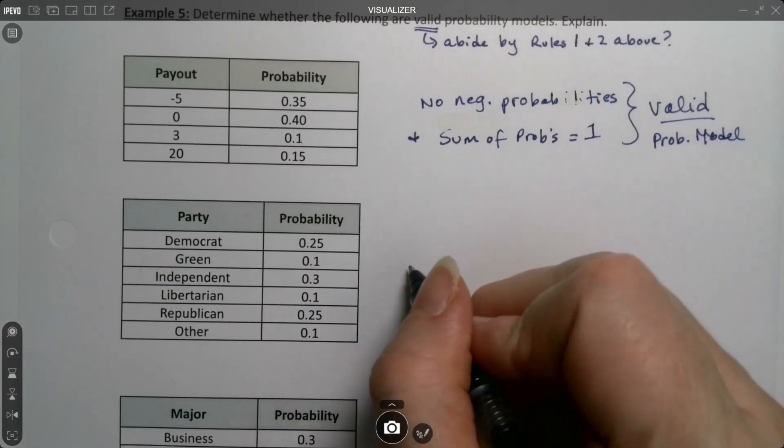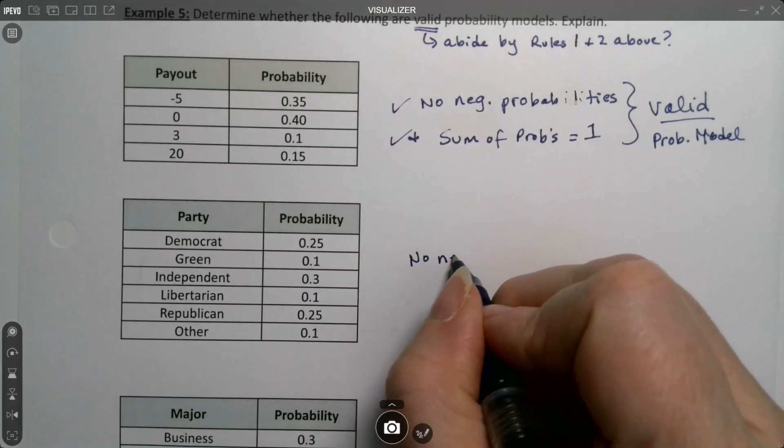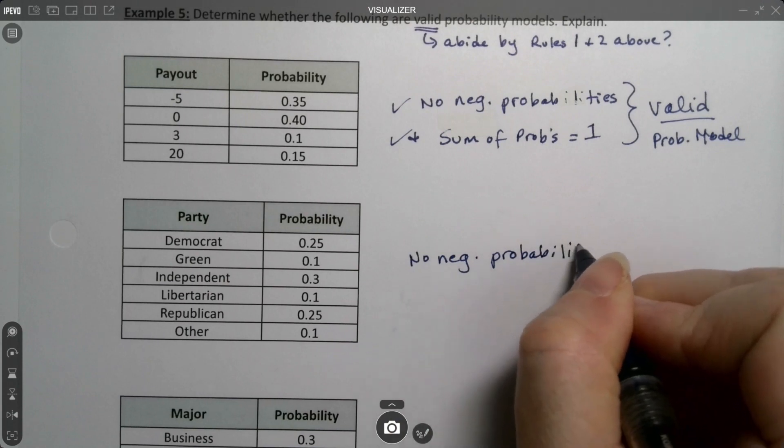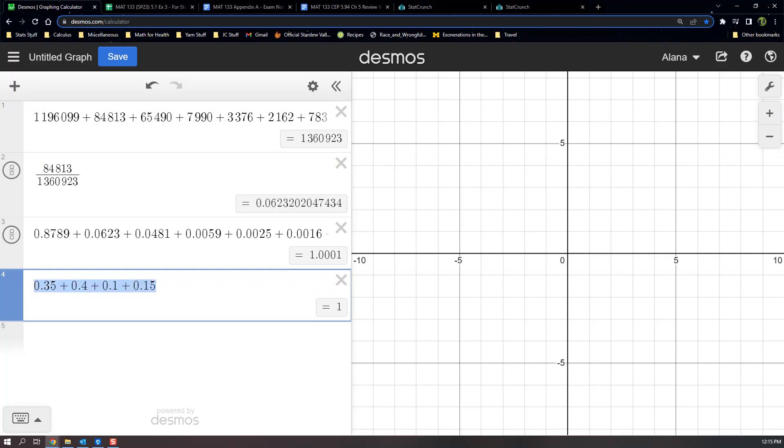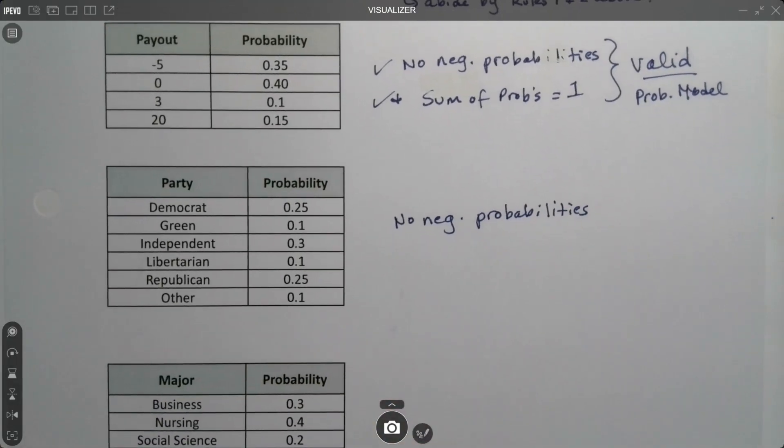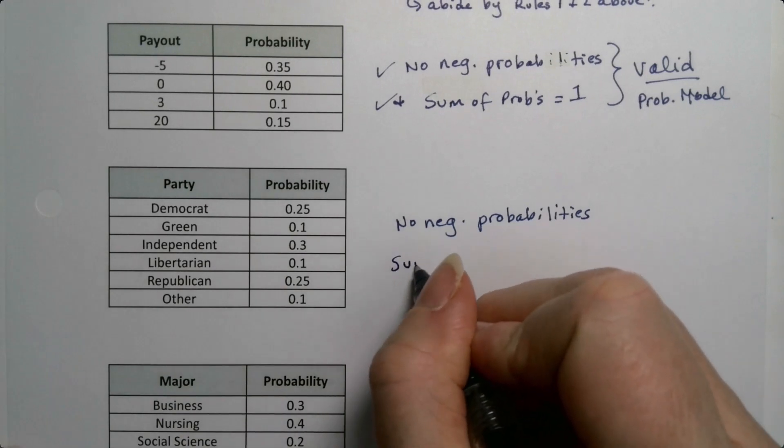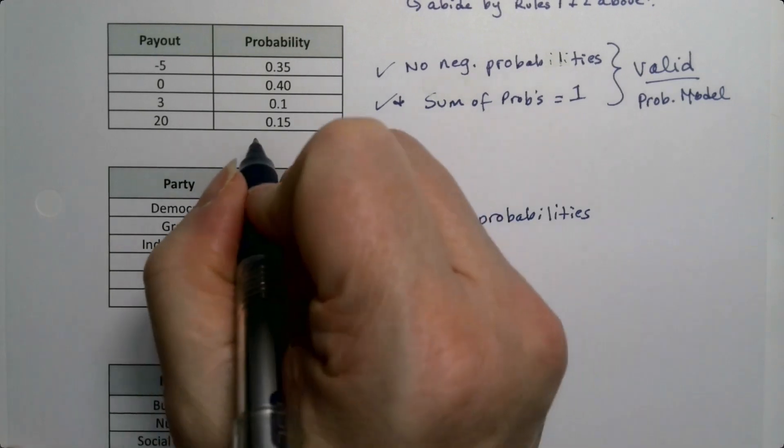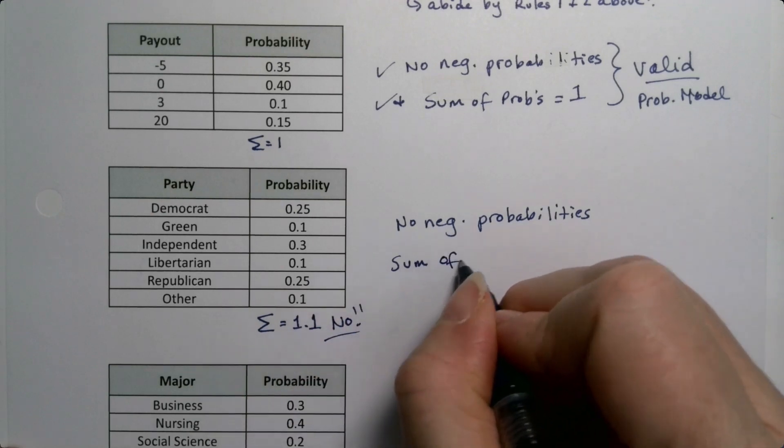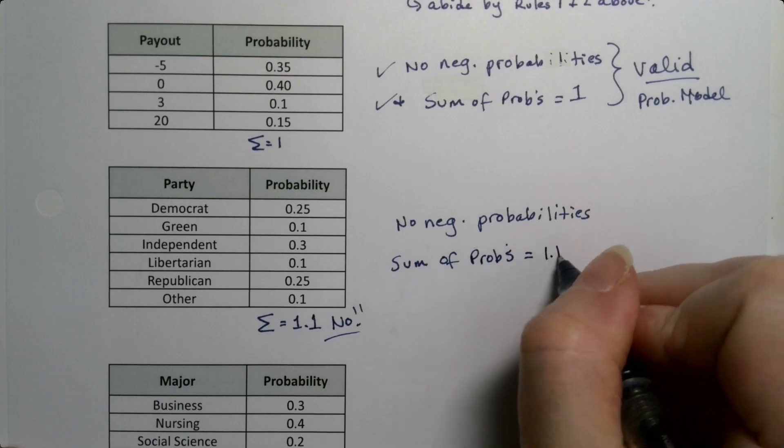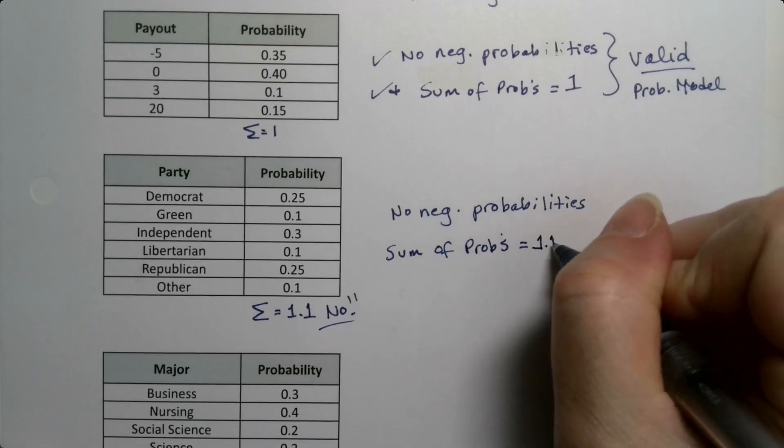Alright, the second one. I see no negative probabilities, so that's good. Now the sum. And it really has to be 1 right on the dot. There's no issue with rounding error on these ones, because these are not empirical probabilities. These are classical essentially. That is not close enough. It needs to be 1 exactly. The sum of the probabilities was 1.1. No, that's not good enough. Sum of the probabilities must equal 1 exactly, unless you're dealing with empirical probabilities and that's only because of rounding error.